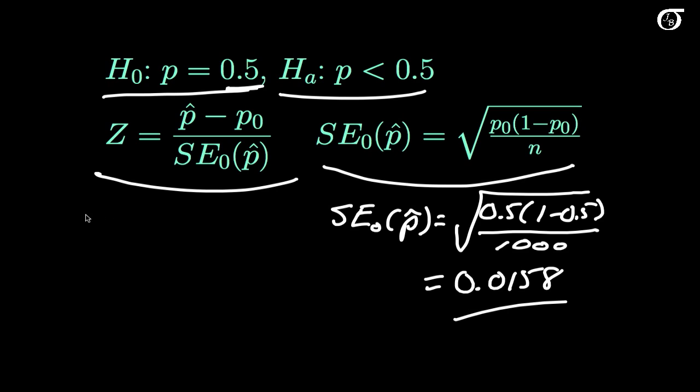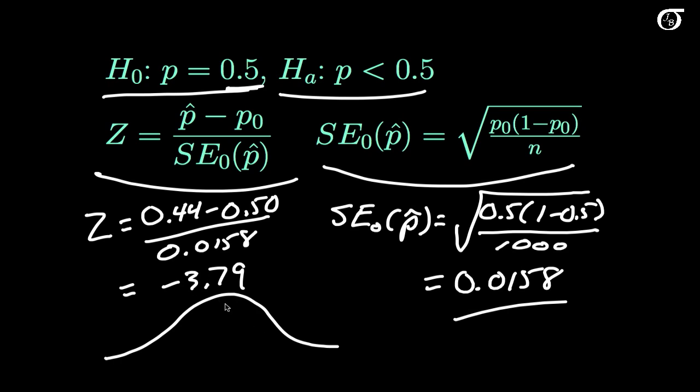Now we can just go ahead and calculate our z statistic. Our z statistic is equal to our sample proportion, minus the hypothesized value, over the standard error of the sample proportion. And this works out to minus 3.79. So we draw out our normal curve, standard normal distribution, 0 in the middle, and minus 3.79 is way out there somewhere. So it's quite a bit out in the left tail, giving a fair bit of evidence against the null hypothesis just looking at it.